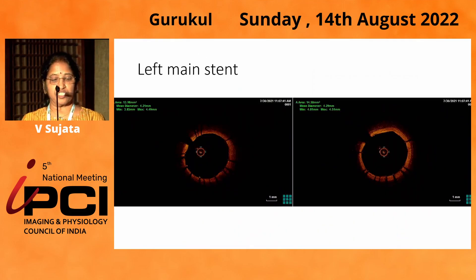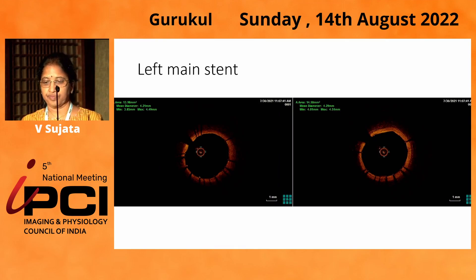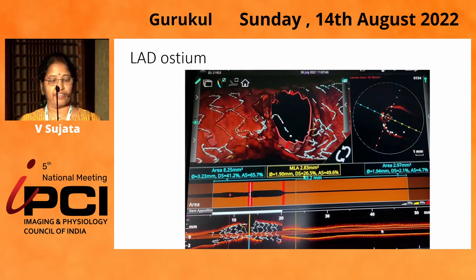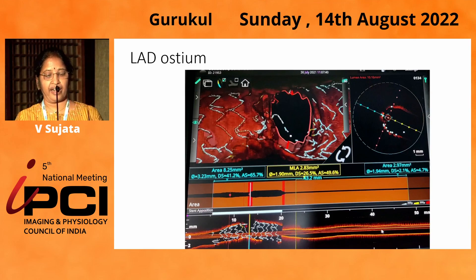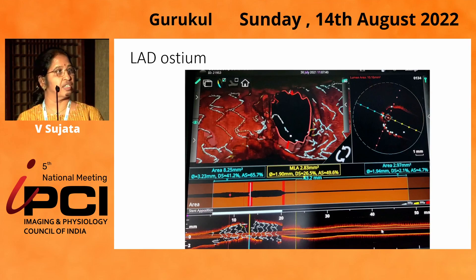As we come to the confluence, the area was 12.6, and the left main stent area was around 14 to 15 mm². We then looked at the struts across the LAD and found there were no struts across the LAD ostium.